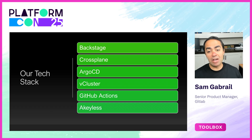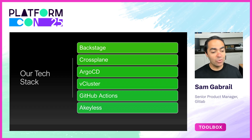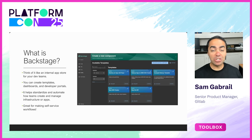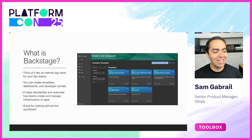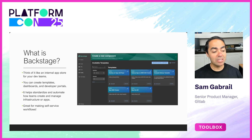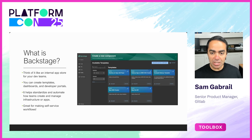In the tech stack, we have Backstage, Crossplane, Argo CD, vCluster, GitHub Actions, and Akeyless for storing our secrets. Backstage is an open source platform donated by Spotify — think of it as an internal app store for your developer teams. You can create templates, dashboards, and developer portals. It helps standardize and automate how your team creates and manages infrastructure and apps, and you can use it as a self-service portal for all your workflows.